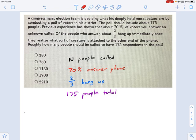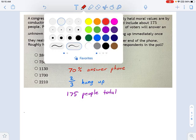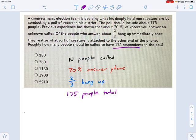If you look at what they want here, they want to talk to 175 people. It's not as easy as just calling up 175 people, because they have figured out, according to past experience, that 70% of the people they call will answer the phone. But 30% don't. They just don't pick up.